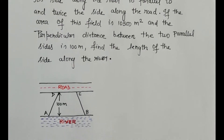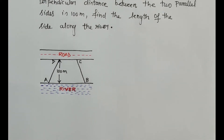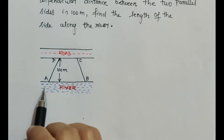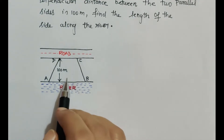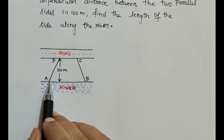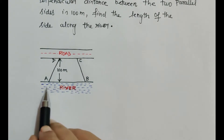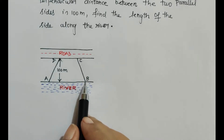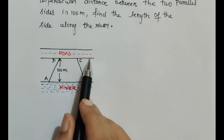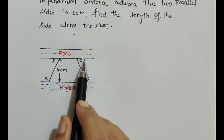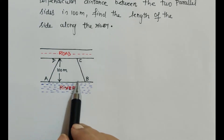Let's understand the question with the help of a figure. Here is the figure — this is the road, this is the river, and ABCD is a trapezium. Side AB of the trapezium, which is along the river, is twice that of the side along the road, and we are asked to find the length of the side along the river.